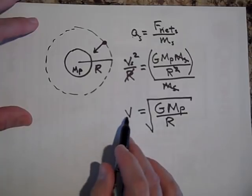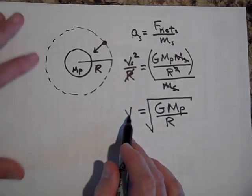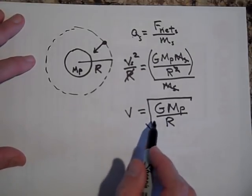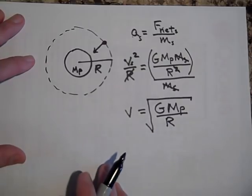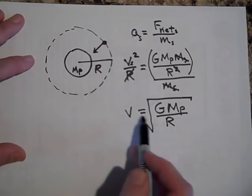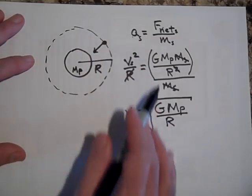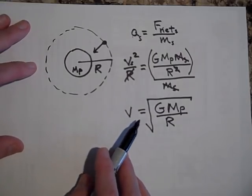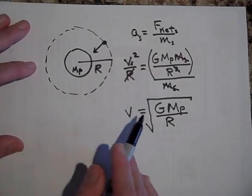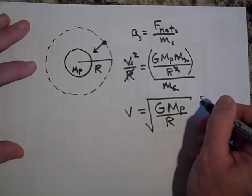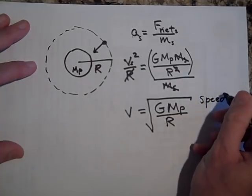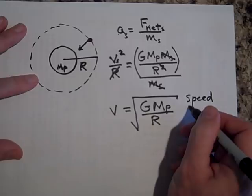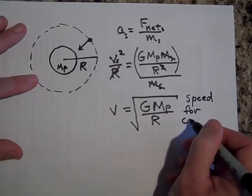This is the orbital velocity you need for a circular orbit. Don't memorize this — it's so easy to derive. This is the necessary speed for a circular orbit.